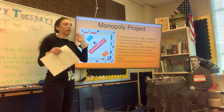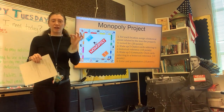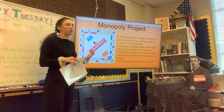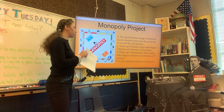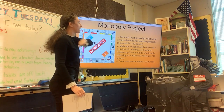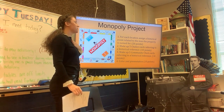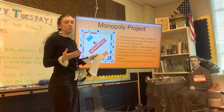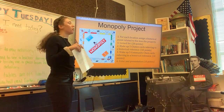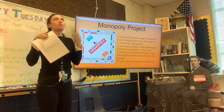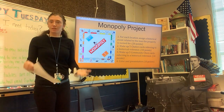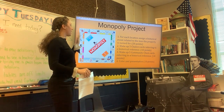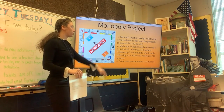If you look at the Monopoly board, I would look at the colors and assign colors to people just to make it easier so you know which one is which. For each location, you'll assign a historical event — or for this project, a person — a historical event in that person's life to that property. And that's worth 20 points.